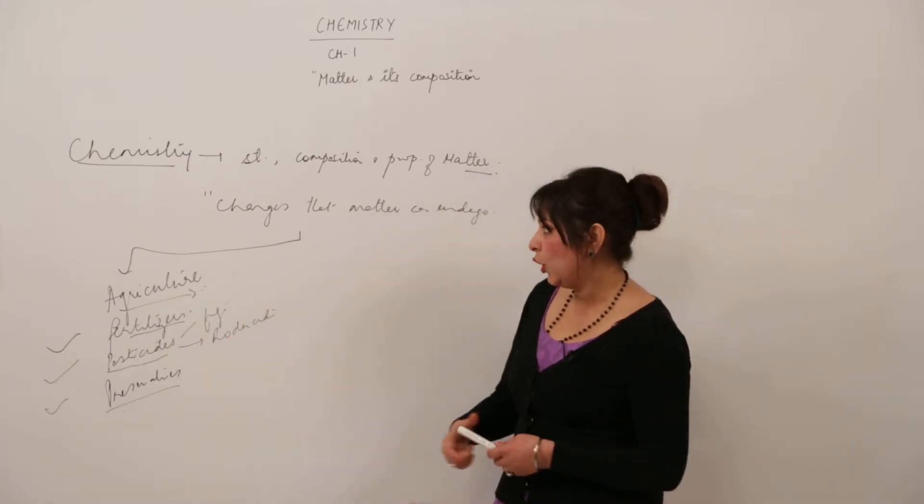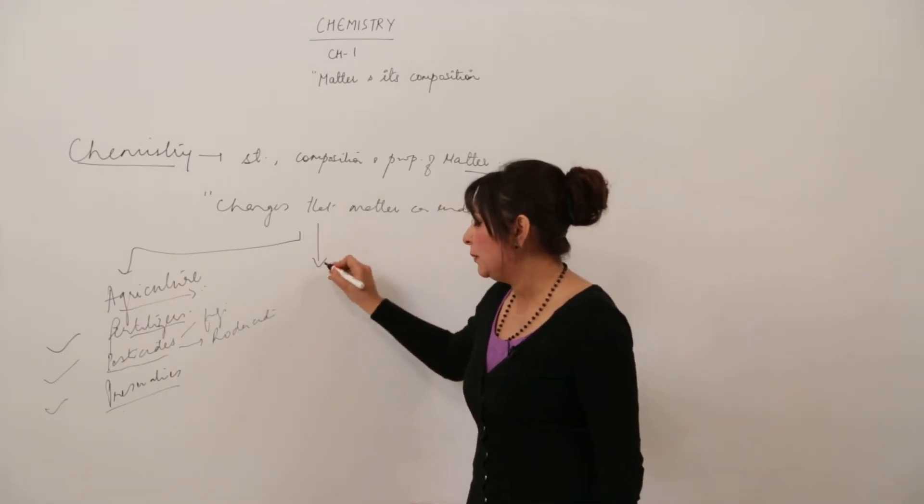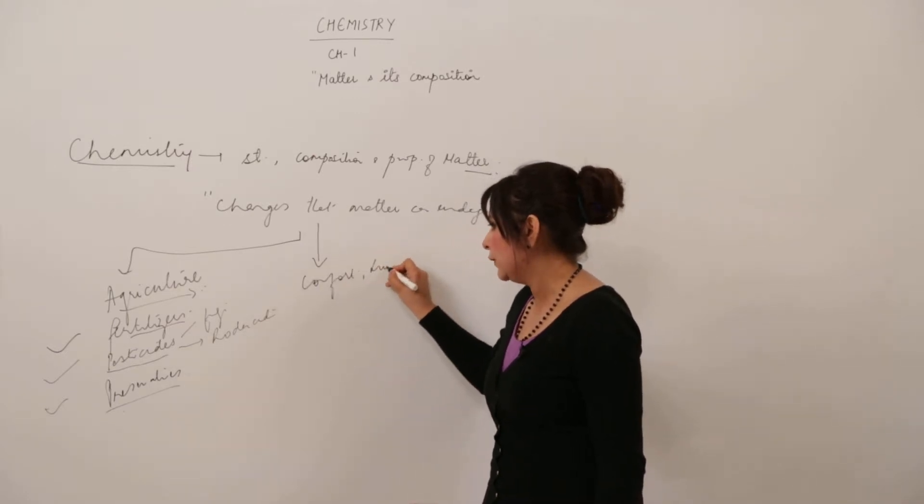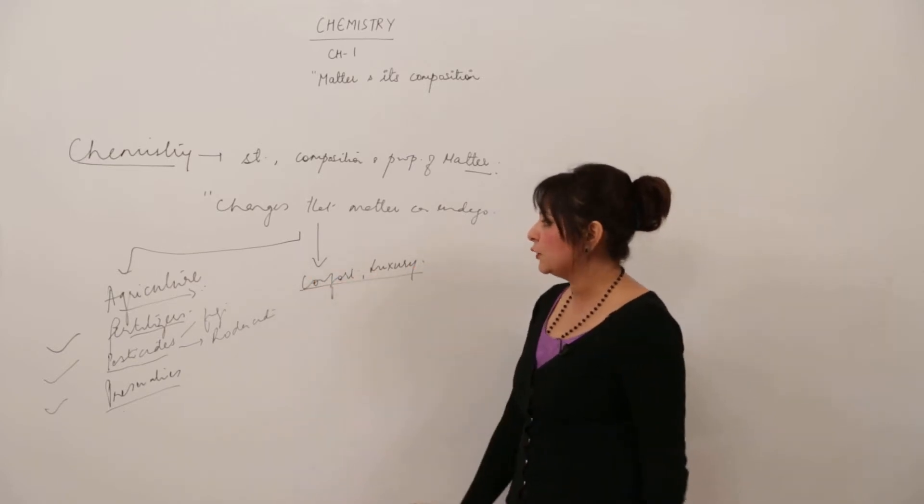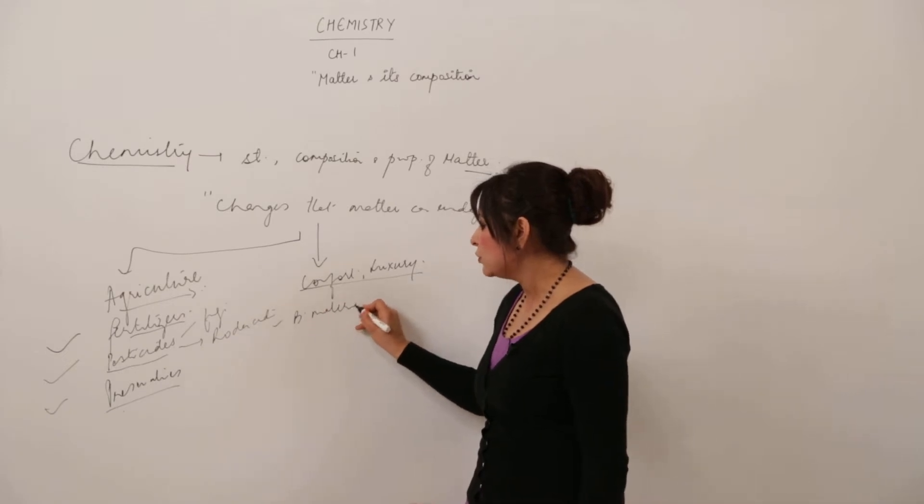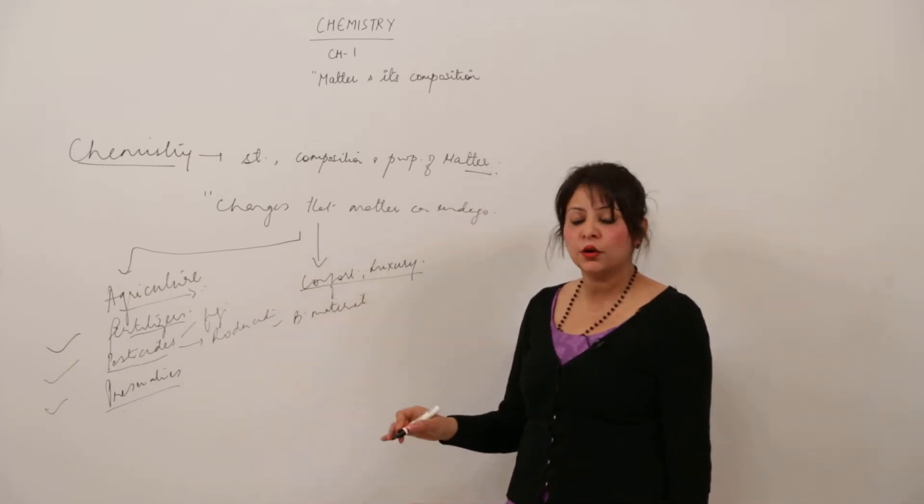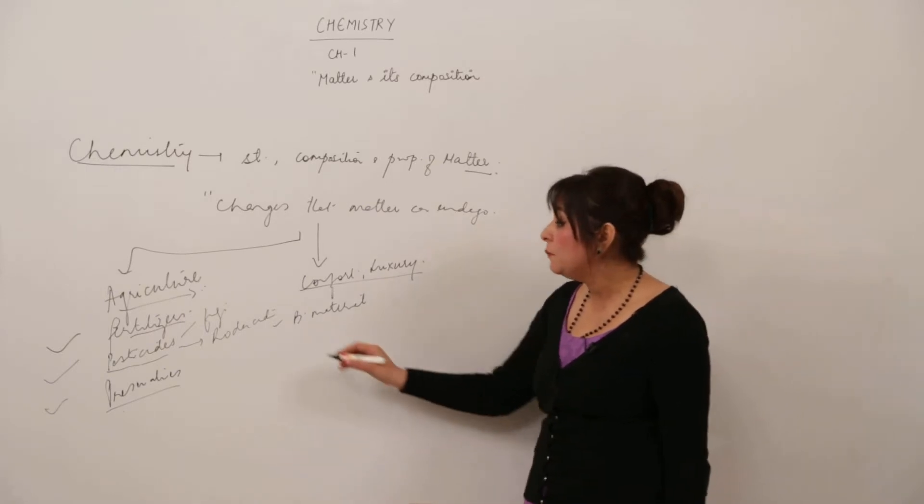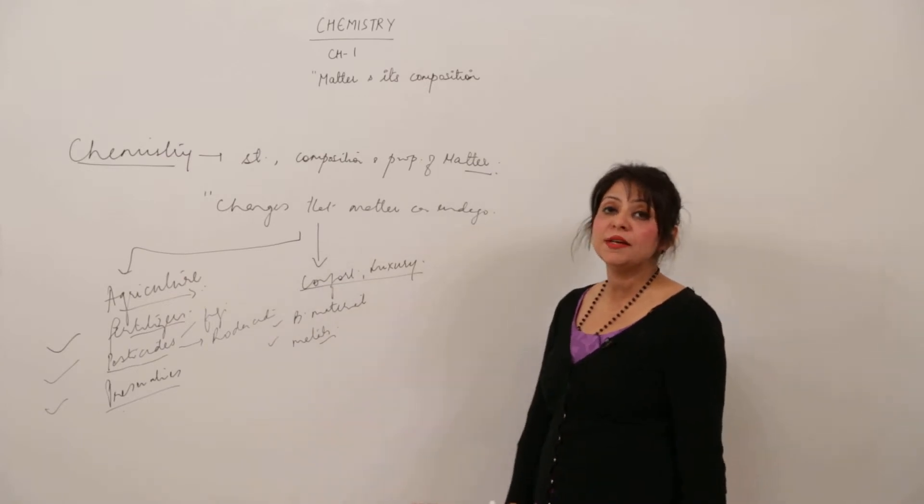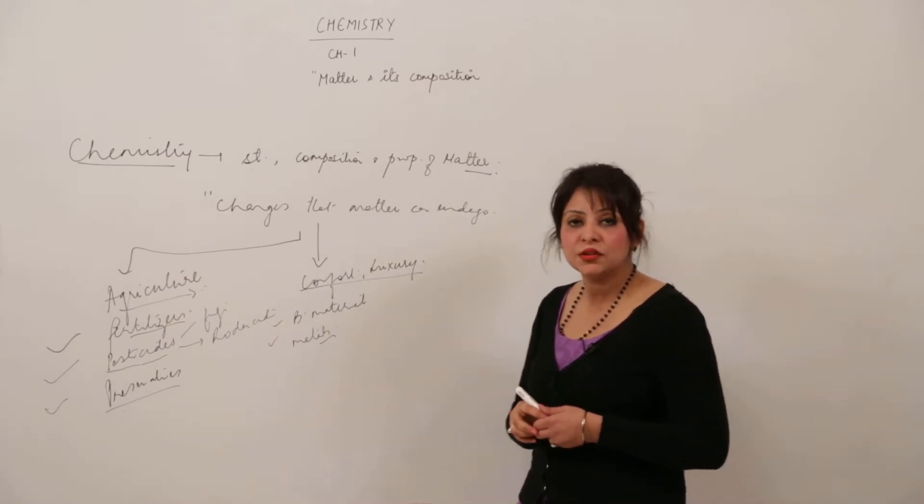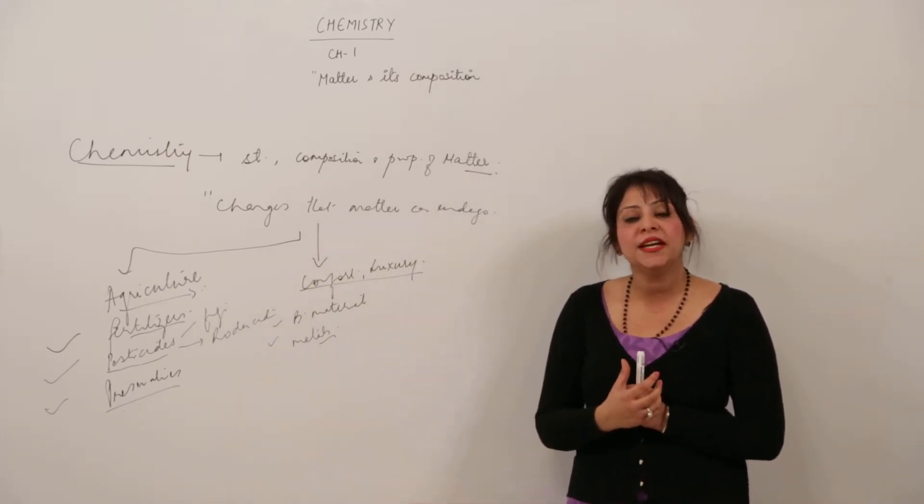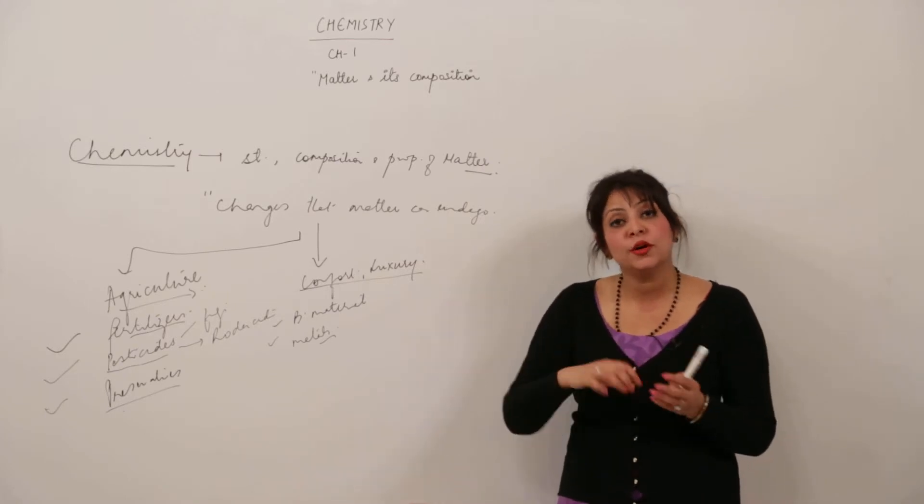It also plays an important role in comfort and luxury. How? The building materials which we use, like cement, sand—everything—are all chemical compounds. The metals which we use are also chemical compounds, because metals are very reactive. They don't occur in nature as such; they occur in combined form, the form is ore. There are certain processes by which we can extract the metal from the ore, so again chemistry is used.